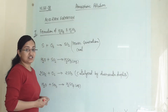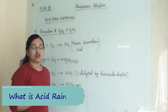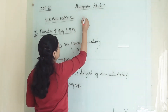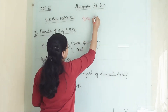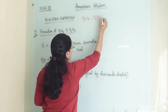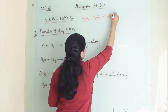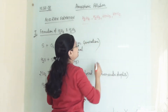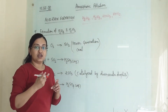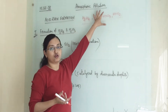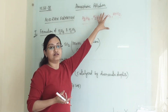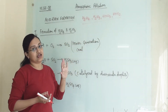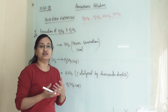Earlier we discussed what acids are responsible for acid rain. Acid rain is basically a mixture of H₂SO₄, H₂SO₃, HNO₃, and HNO₂. All four acids mix up as traces in rainwater, forming acid rain. When rainwater's pH is less than 5.6, it is termed as acid rain.